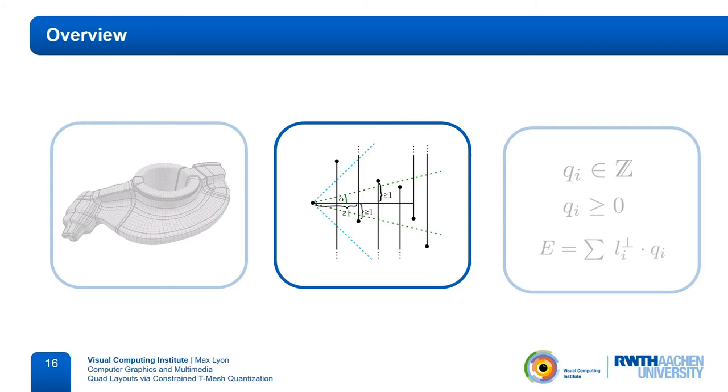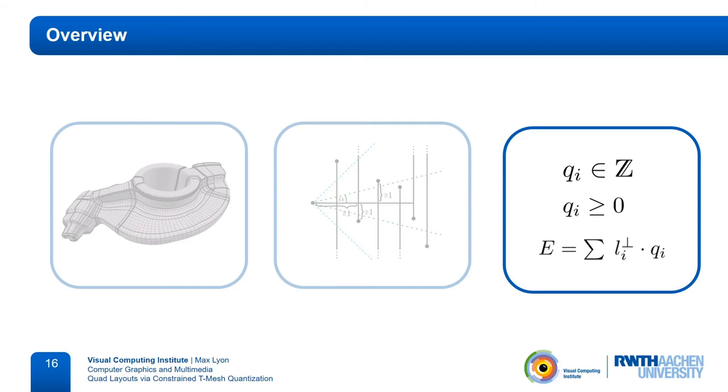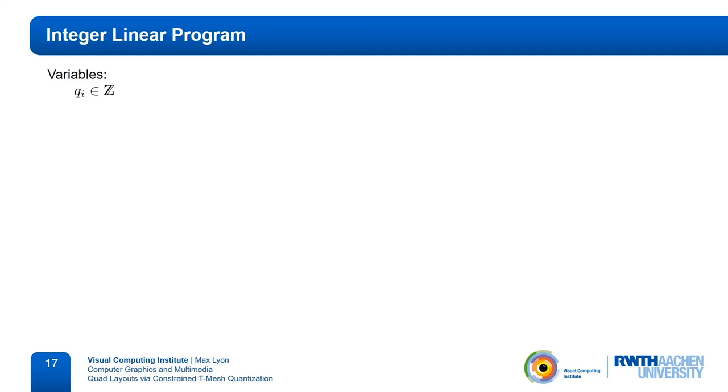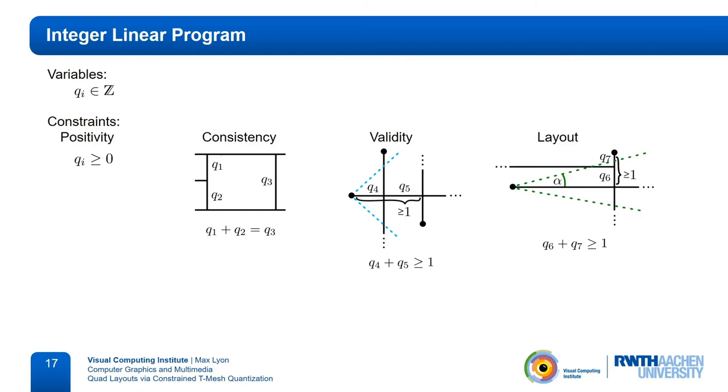Now that we know how to create the t-mesh and how to constrain the quantization such that the layout will be of high quality, the remaining question is how to find a quantization that actually adheres to these constraints. We do this using an integer linear program. The variables of the integer linear program are the quantizations for each arc, which all need to be integer and non-negative. For consistency, the patches of the t-mesh need to be rectangular, which means the sum of the arc quantizations on one side needs to be equal to the sum on the other side. This is a simple equality constraint. Validity and layout constraints both specify sets of arcs of which at least one needs to be quantized to at least one. This is easily transformed into a linear constraint that states that the sum of the quantizations of these arcs needs to be greater than or equal to one.